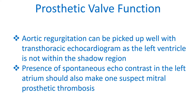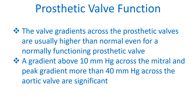Aortic regurgitation can be picked up well with transthoracic echocardiogram, as the left ventricle is not within the shadow region. Presence of spontaneous echocontrast in the left atrium should also make one suspect mitral prosthetic thrombosis. The valve gradients across prosthetic valves are usually higher than normal even for a normally functioning prosthetic valve. A gradient above 10 mmHg across the mitral and a peak gradient more than 40 mmHg across the aortic valve are significant.